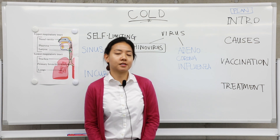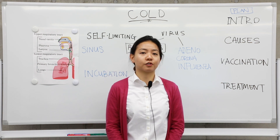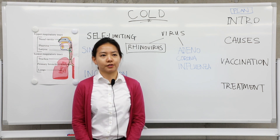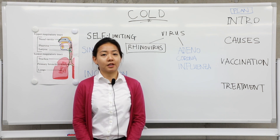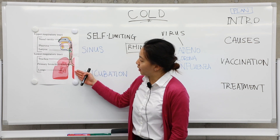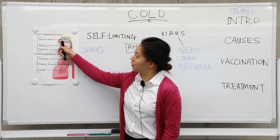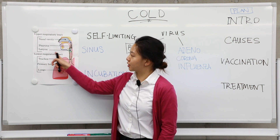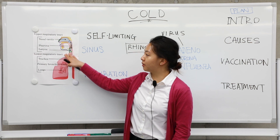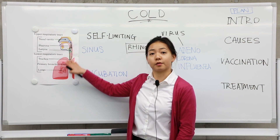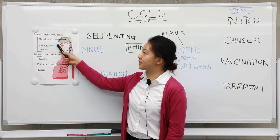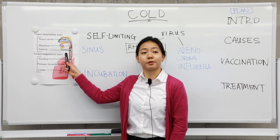The common cold is sometimes incorrectly referred to as the flu, but it is an upper respiratory tract infection caused usually by a virus. Here we have a diagram of the mouth, the nose, and the lungs. From this section above, you have the upper respiratory tract, and below this you have the lower respiratory tract. A common cold and the flu both affect only the upper respiratory tract.